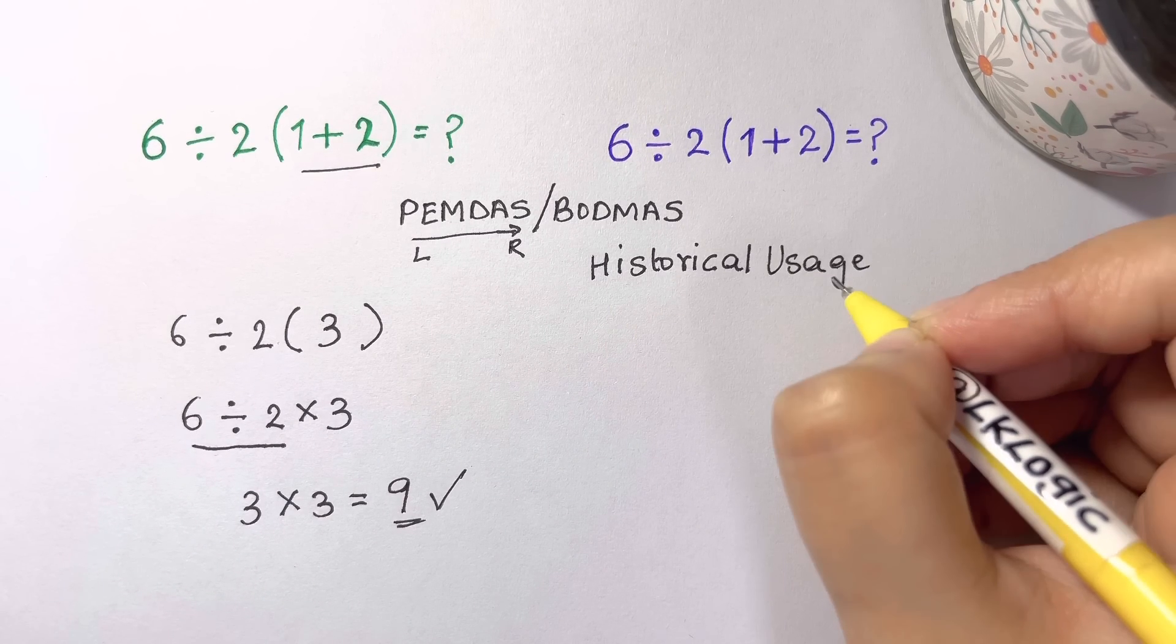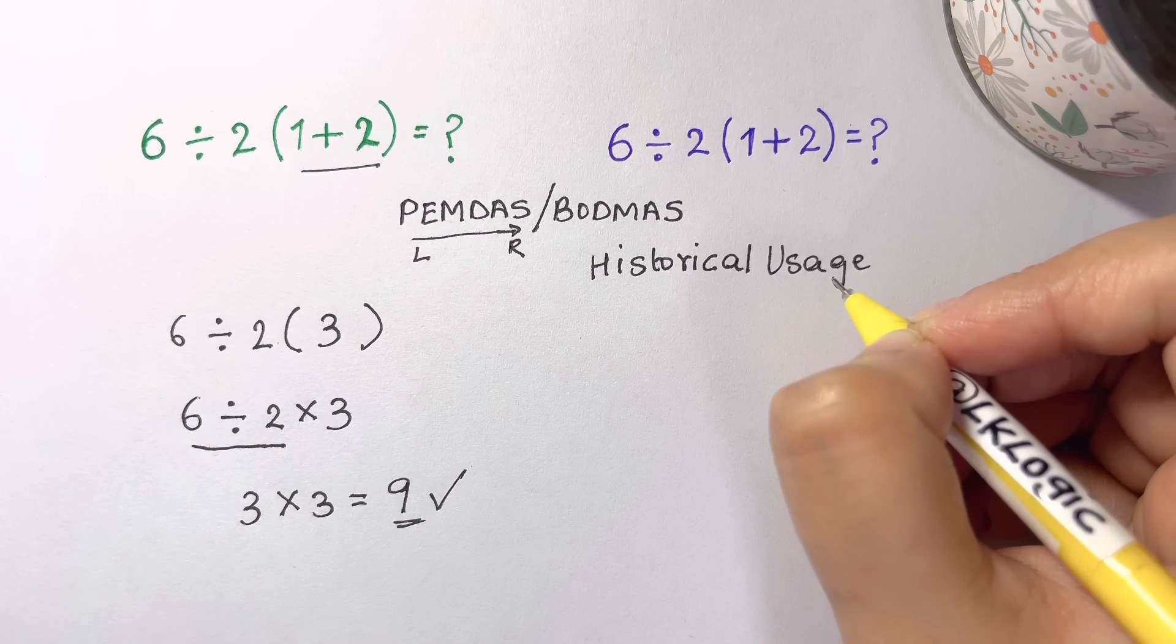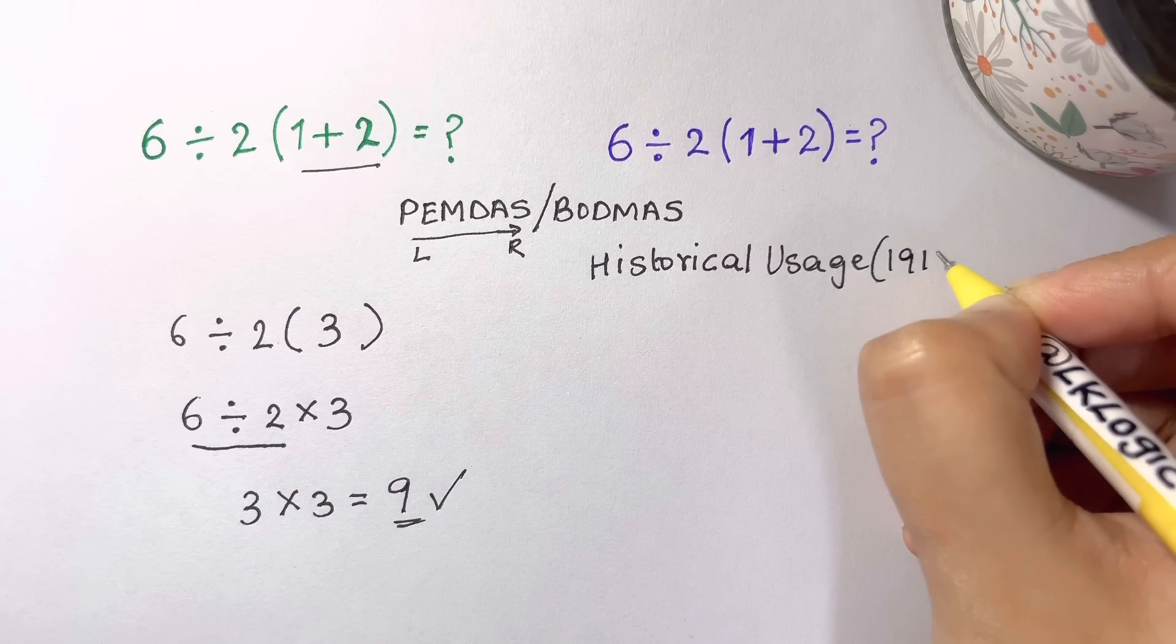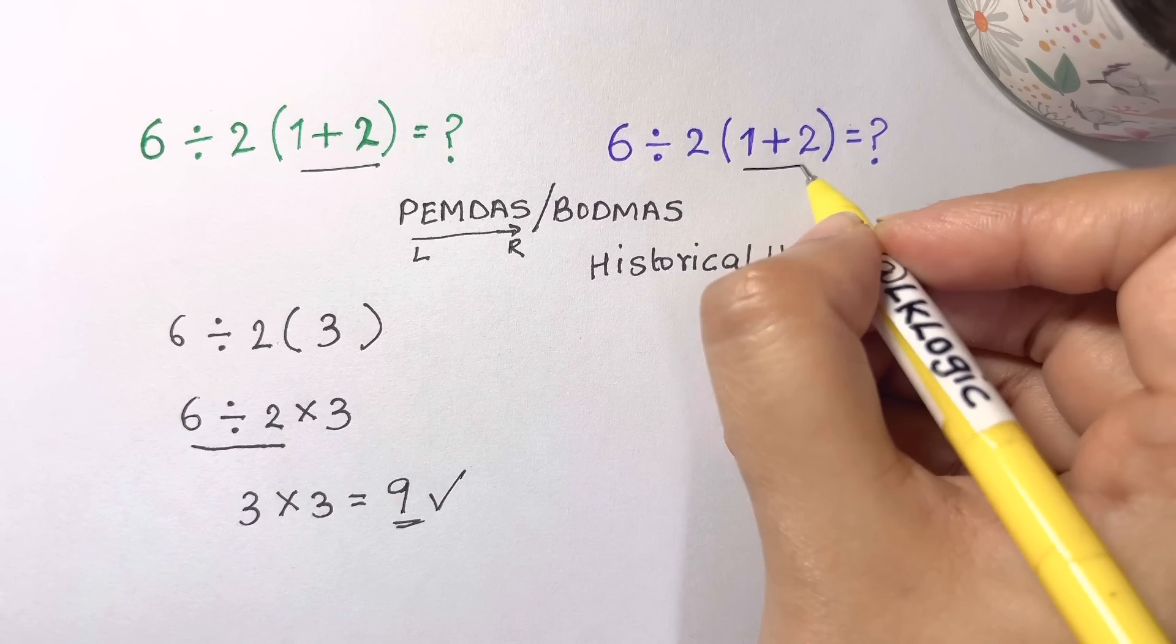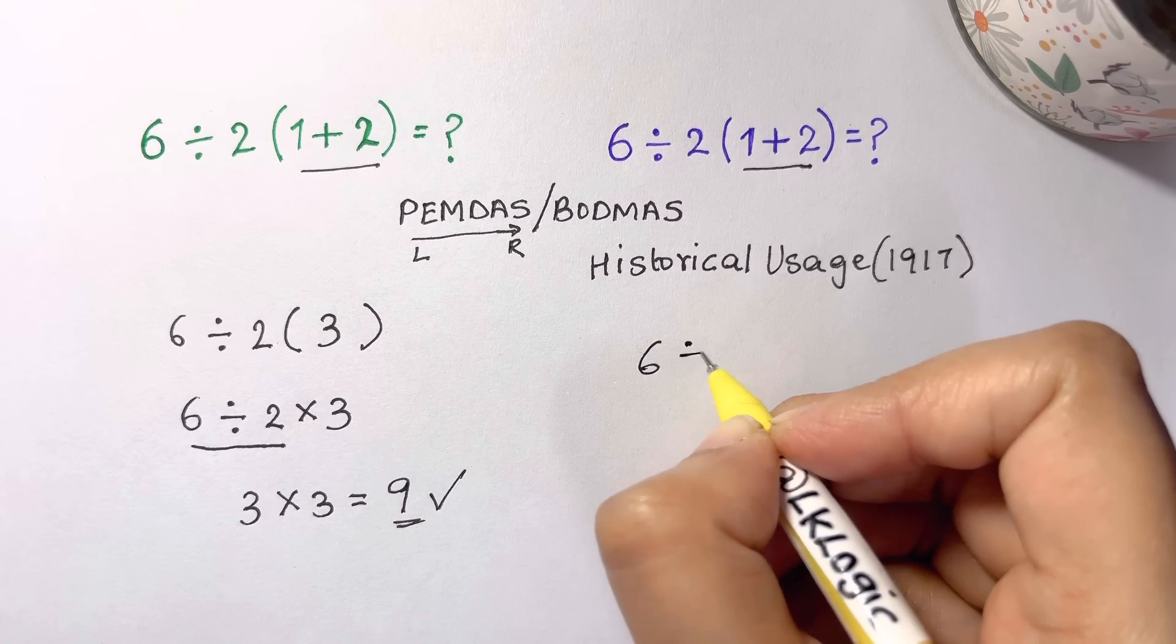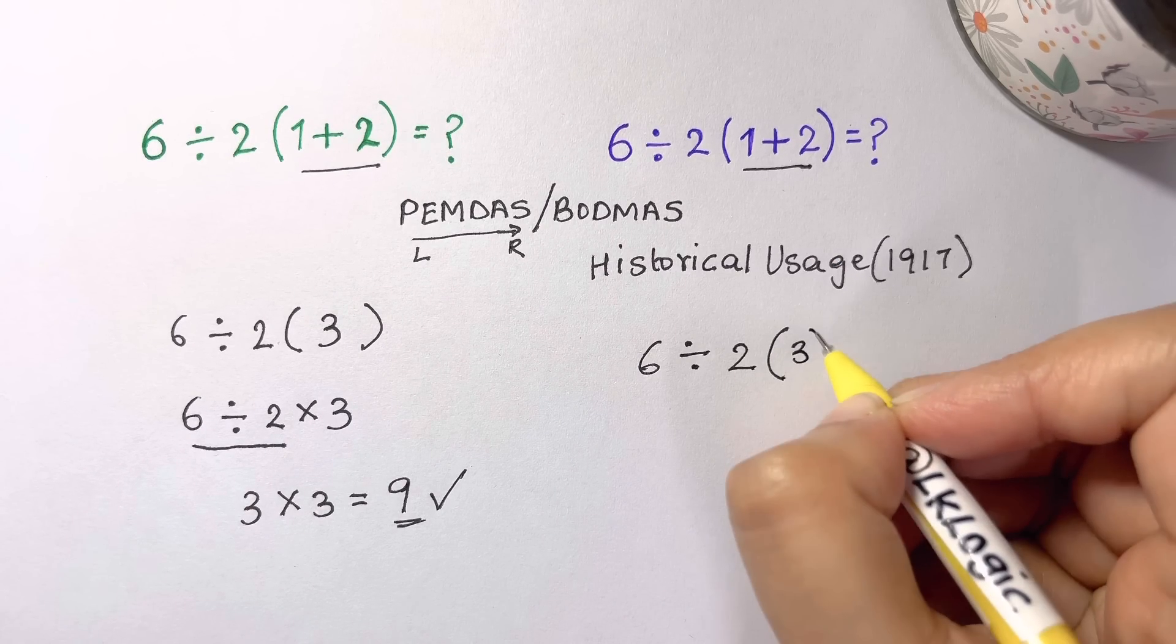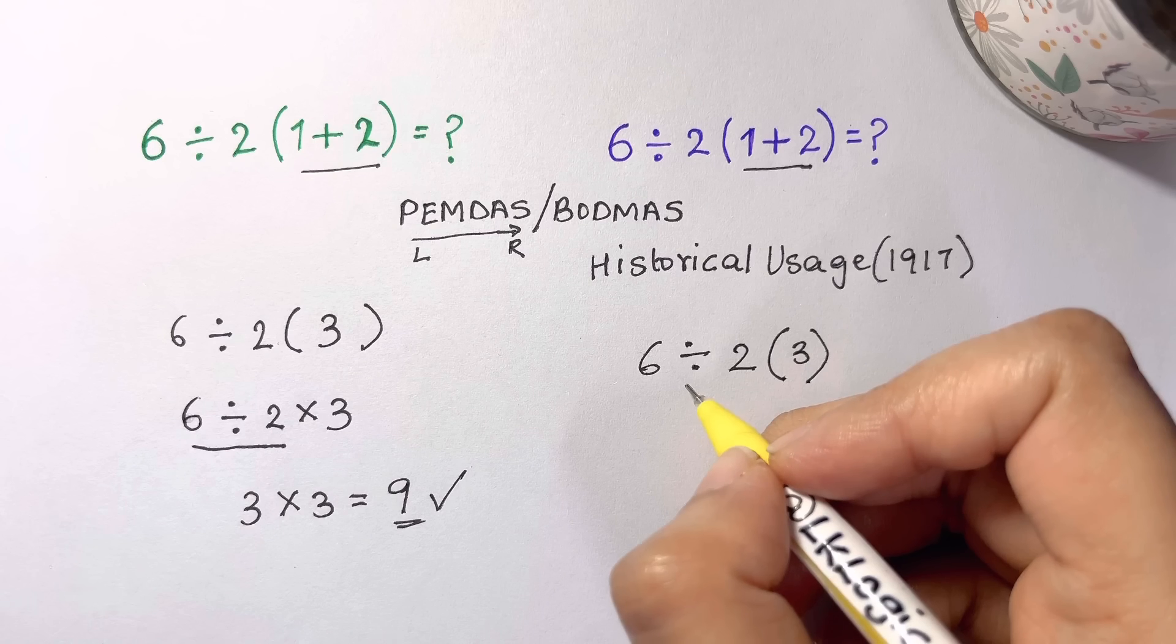So I actually found some documentation that the order of operations did have slightly different understanding in certain texts in 1917 or before. The first part is the same as before. One plus two can be written as three, six divided by two times one plus two is three. The debate that comes around is the division symbol.